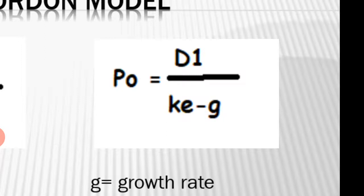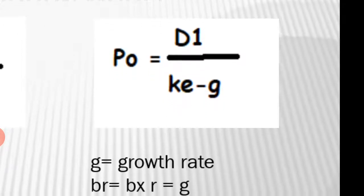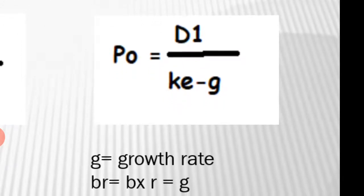The simplified equation is P0 = D1 / (KE - G), where D1 means dividend at end of the period. If the current dividend is given, we have to find the future dividend based on the growth rate. KE means cost of equity and G means growth rate.